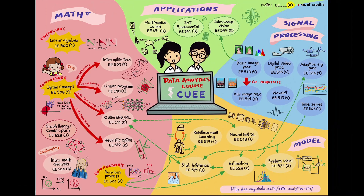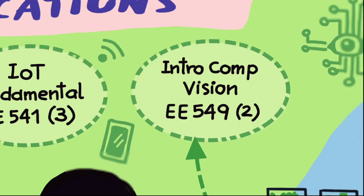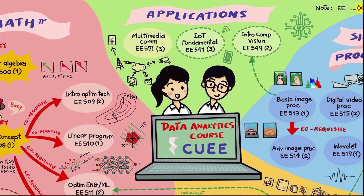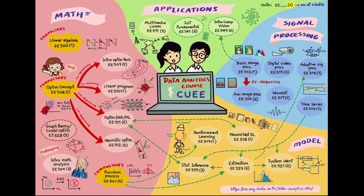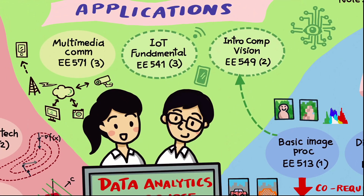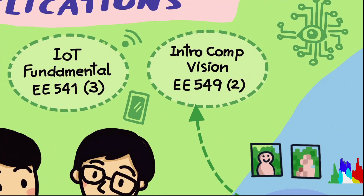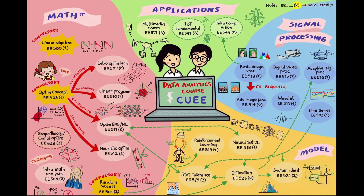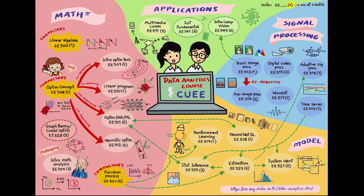You may also notice the number in parentheses next to each course name — for example, Introduction to Computer Vision with a parentheses number two means that course has two credits. Courses listed with a dashed line, such as Multimedia, IoT Fundamentals, and Computer Vision, are not officially listed in our program. You can check other cluster programs for details on those courses.